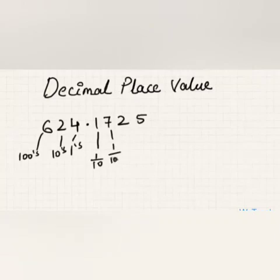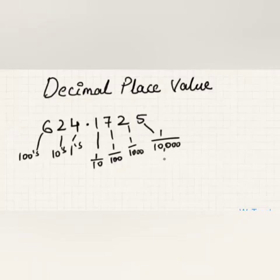Two is in the one-thousandths place and five is in the one-ten-thousandths place. If you observe the decimal part, the place value is increasing by one-tenth each time you move towards the right.